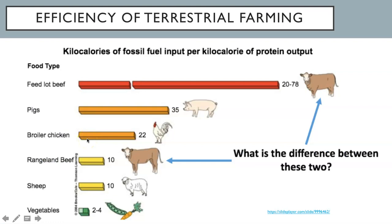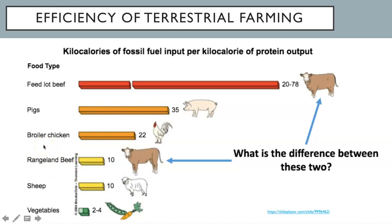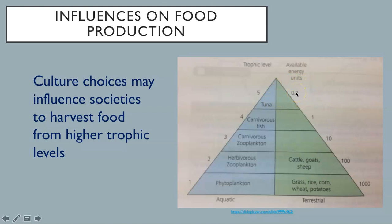This image compares the efficiency of different terrestrial food production systems in terms of kilocalories of fossil fuel input per kilocalorie of protein output. Of course, the efficiency of producing vegetables is the highest with the lowest input per output. Think of the inputs of feeding cattle versus allowing them to eat freely on a range. You need to be able to discuss how cultural choices may influence societies to harvest food from higher trophic levels. For example, culturally we have developed a taste for tuna and as such eat from high trophic levels.